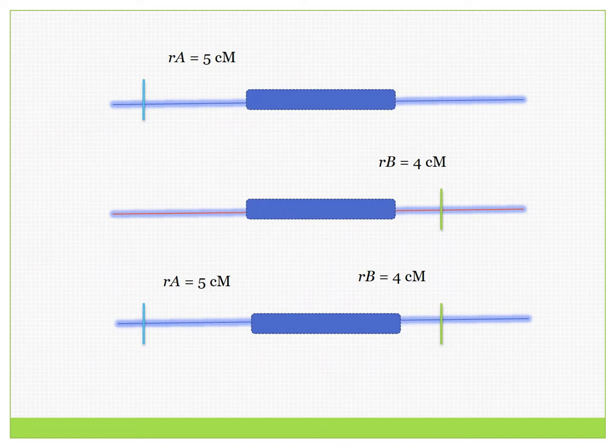Molecular markers are specific regions of the DNA which are located on flanking regions of the desired trait. In this figure, the blue rectangle indicates the gene encoding the specific phenotype or trait. RA and RB are designated as molecular markers which are located on either side of this gene. It is essential to have two or more molecular markers linked to a specific trait, to ensure that the trait is not lost over successive generations as a result of recombination.